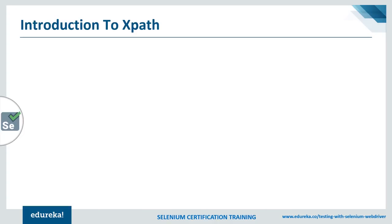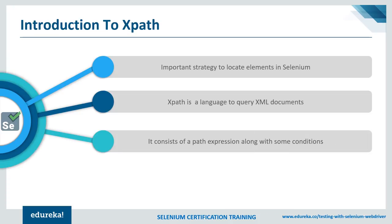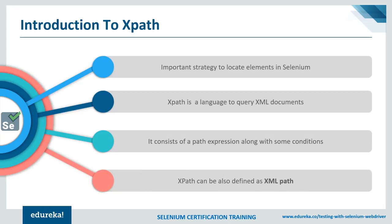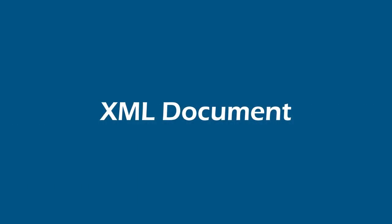So what is XPath? XPath, also called XML Path, is a language to query XML documents. It consists of a path expression along with some conditions. As already mentioned, it is an important strategy to locate elements in Selenium. Now let's see how an XML document looks like.